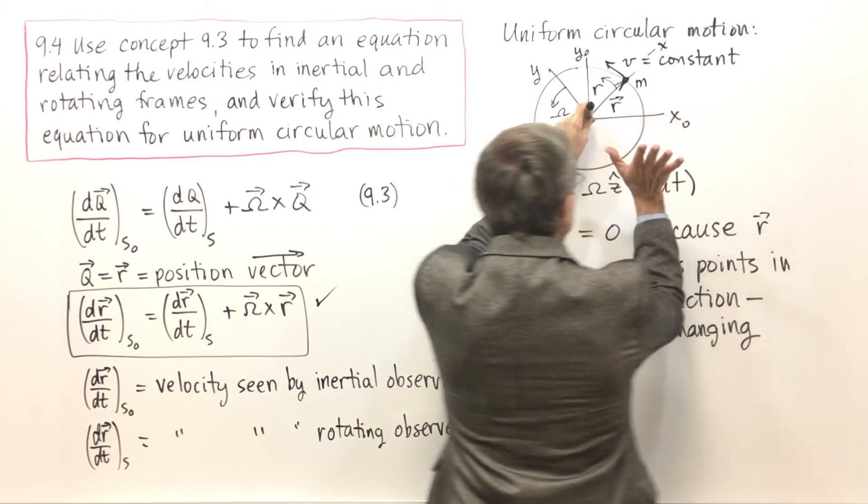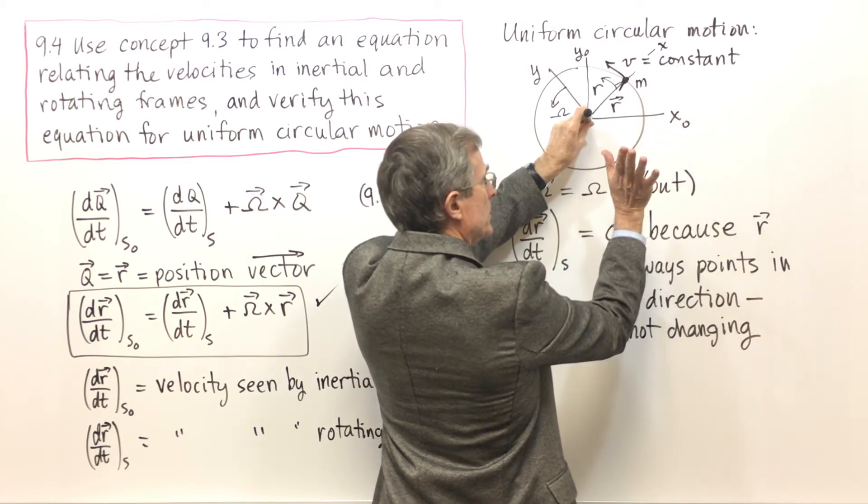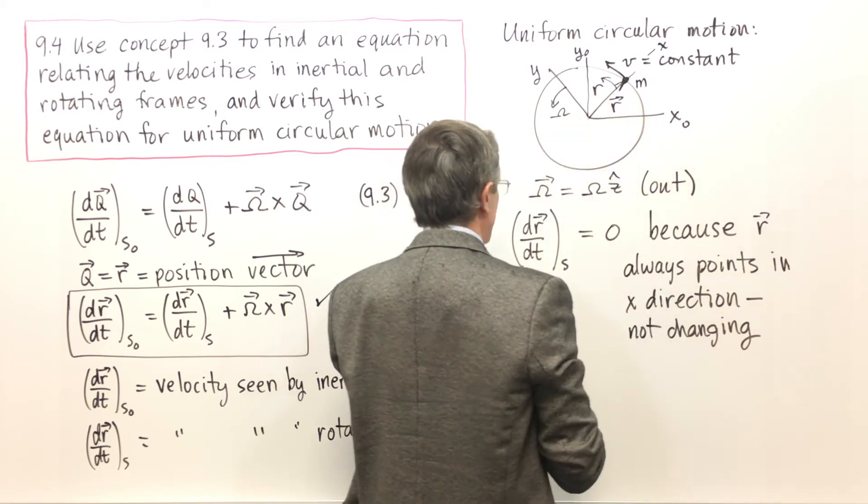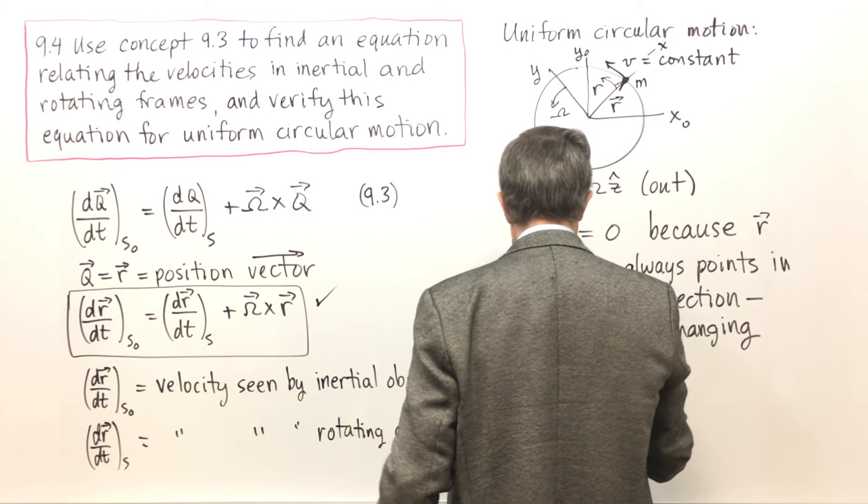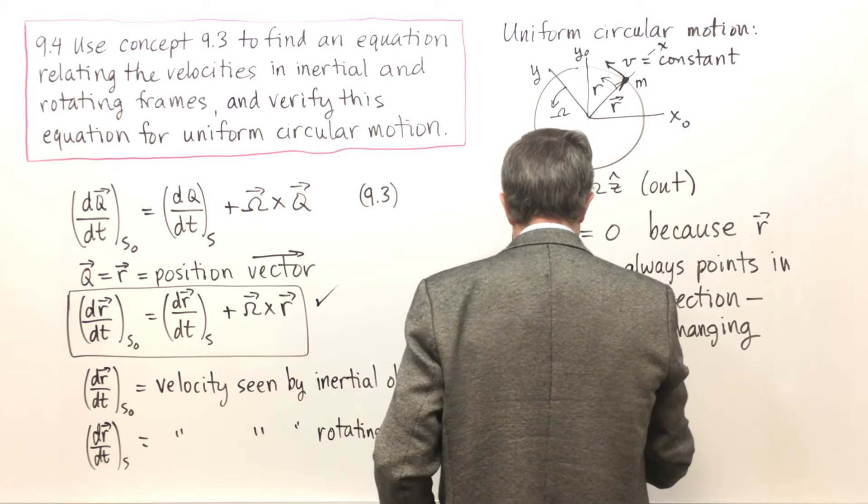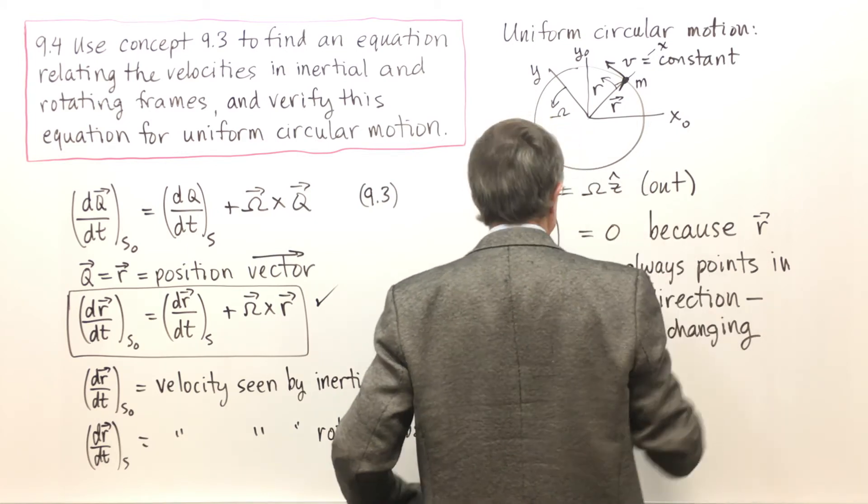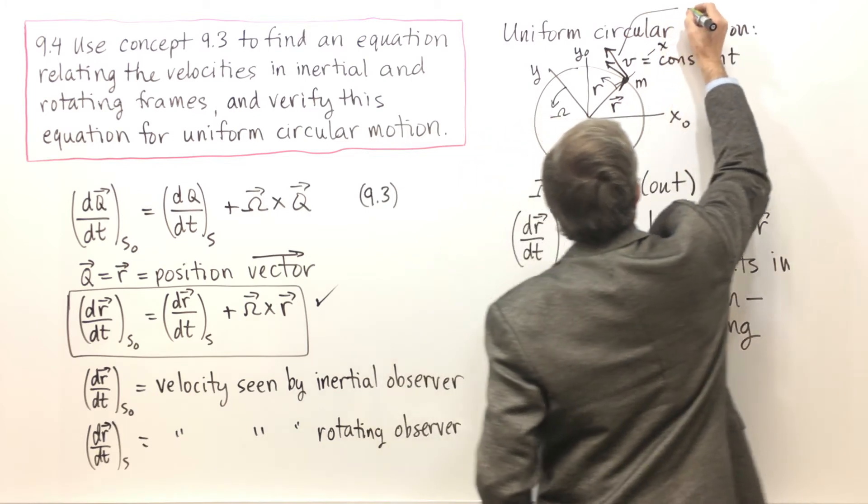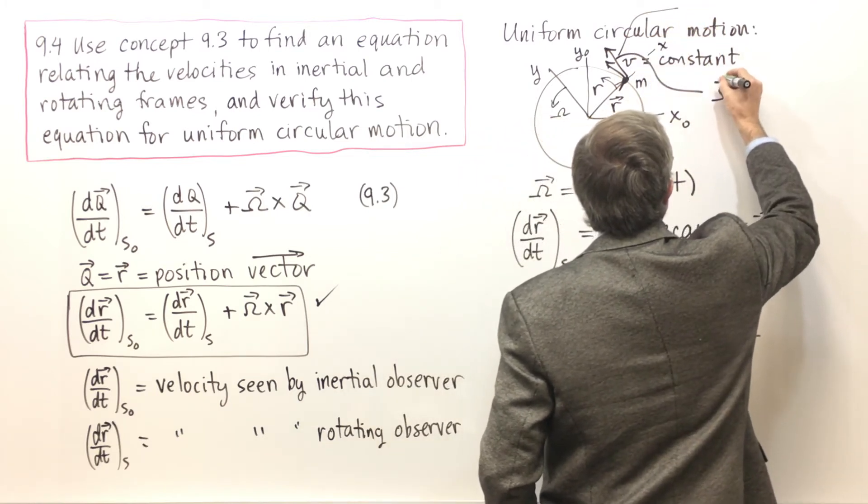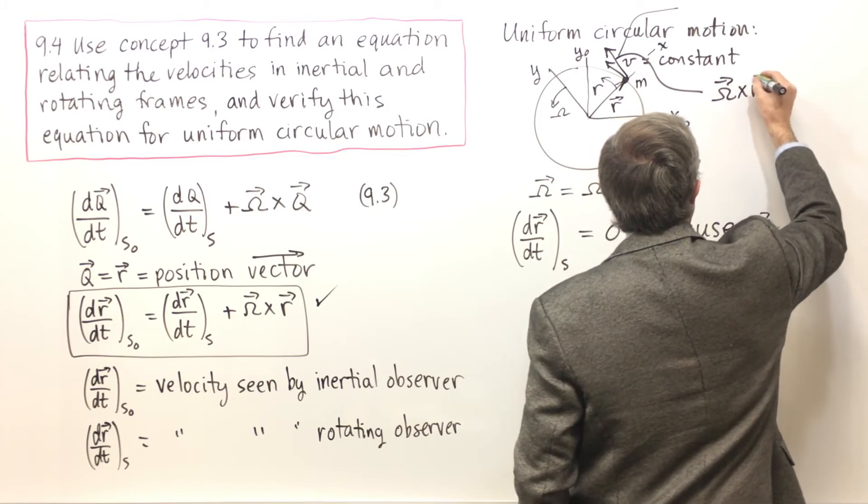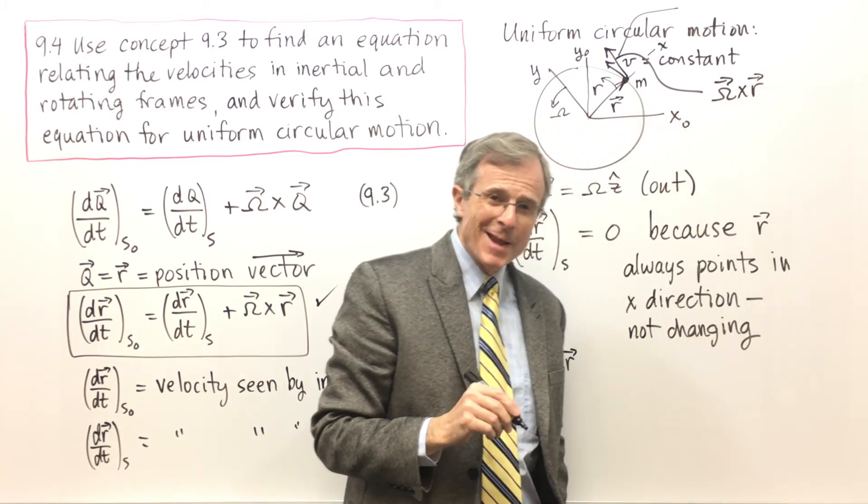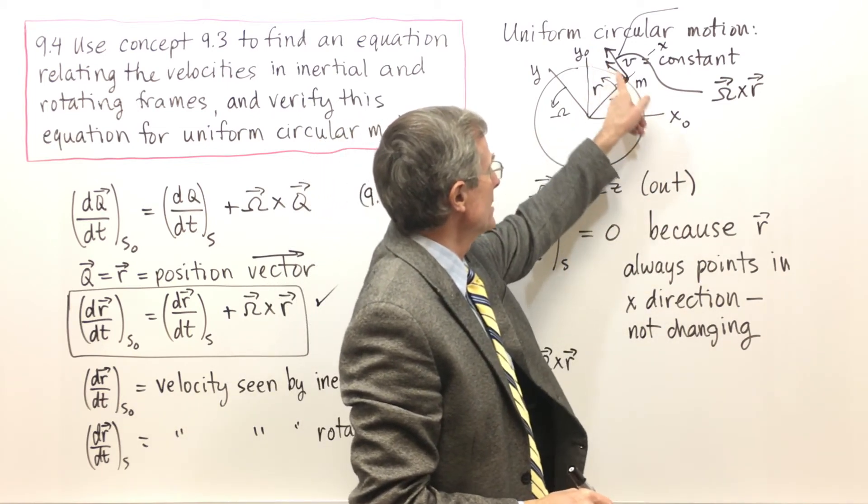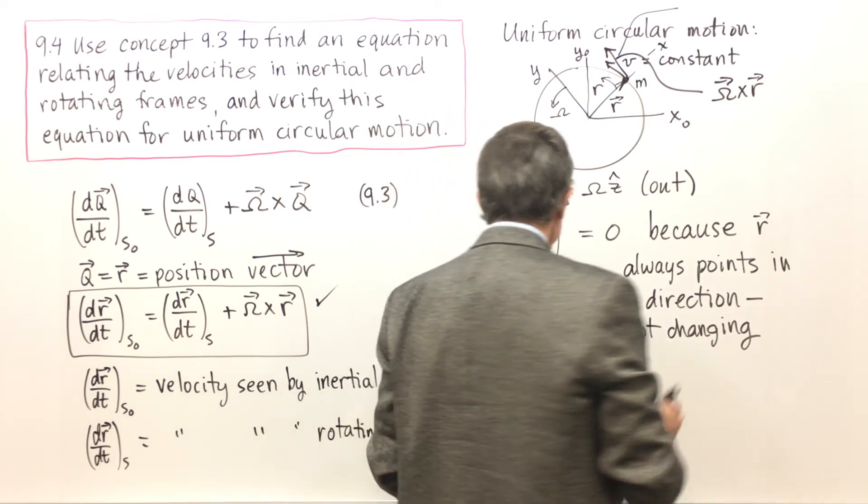Well omega crossed into R: put my fingers in the direction of omega, cross them into R, my thumb will give the direction of omega cross R. In fact it's this direction right here. It's not an accident that omega cross R points in the direction of the velocity. In fact we're pretty much done.